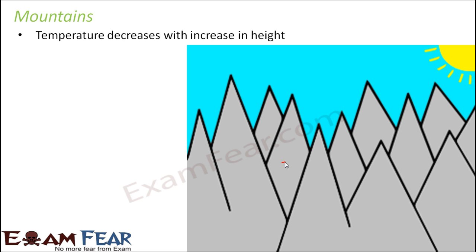As you go higher and higher, the temperature decreases with increase in height. Therefore, you would have seen that huge mountains — mostly their top regions — are generally snow covered. That's because by the time you reach the top of the mountains, the temperature becomes so low that they are all covered with snow. So it's freezing at the top of the mountains, and that tells us that it is very cold at the mountain tops.